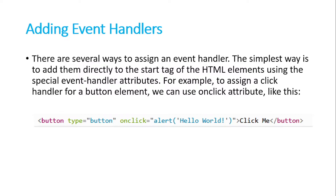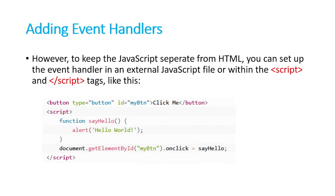There are several ways to assign an event handler. The simplest way is to add them directly to the start tag of the HTML elements using the special event handler attributes. We can use JavaScript attributes to assign any function which will be executed when that event occurs. For example, to assign a click handler for a button element, we can use the onclick attribute. We can also describe a separate function in the script tag.